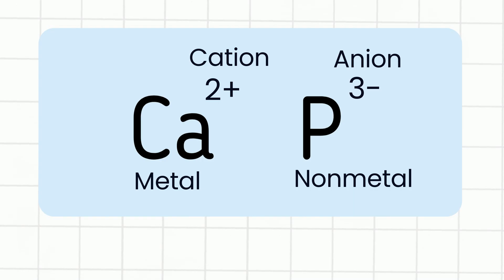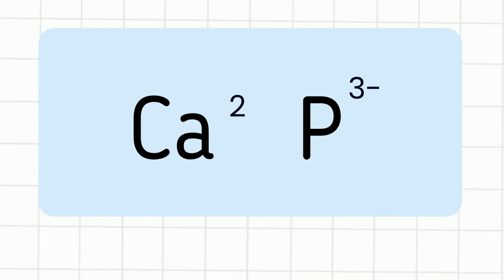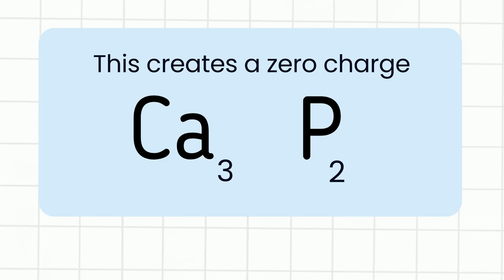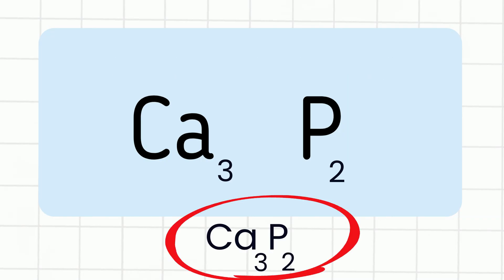So now what we need to do is we need a zero charge. So an easy way to do this is just crisscross, and so we're going to take the 2 from the calcium and we're going to crisscross and it will go with the phosphorus, and then the negative 3 charge. We are not taking the charge, just the number, and then when we crisscross we take the 3 to the calcium. So it will be written calcium with a subscript of 3 and phosphorus with a subscript of 2.